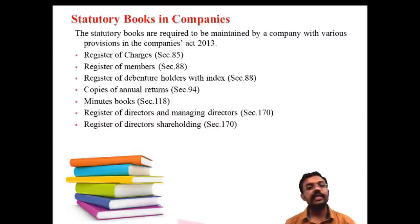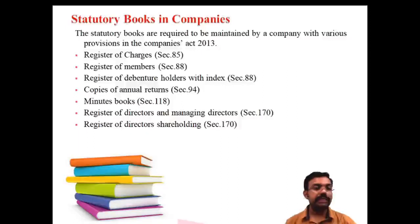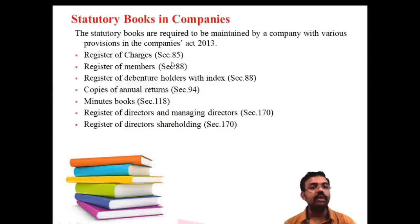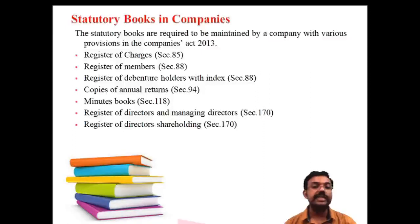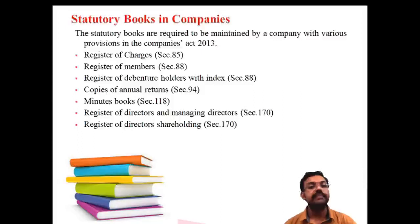Now, what are the important statutory books of a company? A company is an artificial person created by law with a common seal and perpetual succession. The important statutory books are: first, the register of charges as per Section 85; second, the register of members as per Section 88; and third, the register of debenture holders with index — as debentures carry various rates like 8%, 7%, 9% — also maintained as per Section 88.